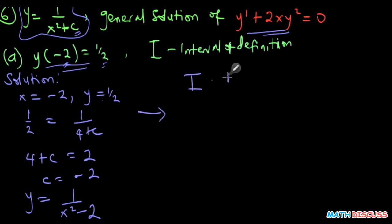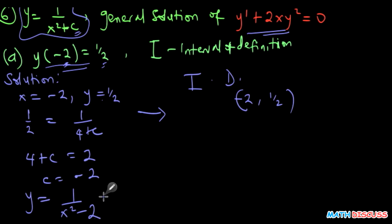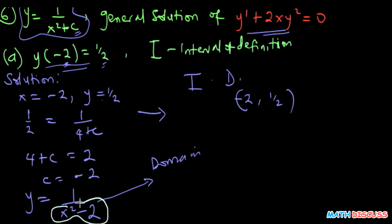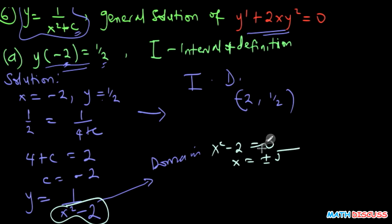The interval of definition satisfies y as a domain of a function. The domain is all real values for which the denominator does not equal zero. Looking at the denominator, x squared minus 2 equals zero only when x equals plus or minus the square root of 2. These are the only values for which y is going to be undefined.